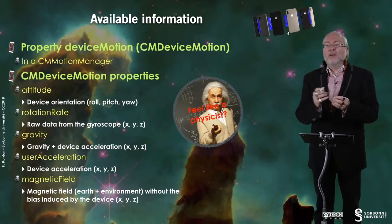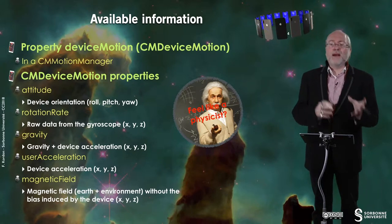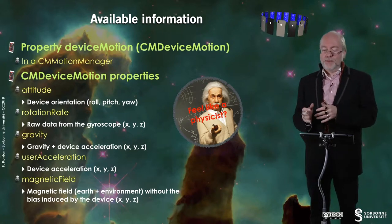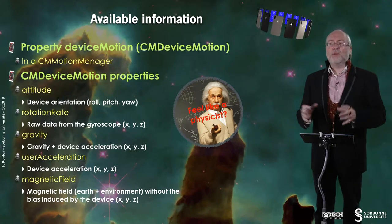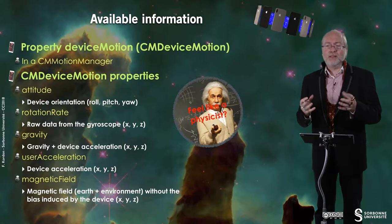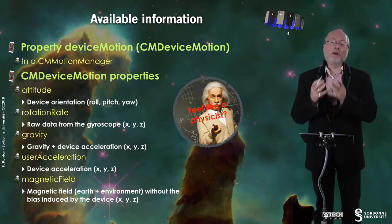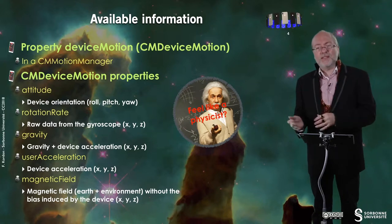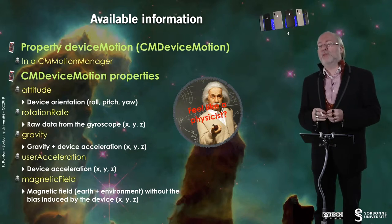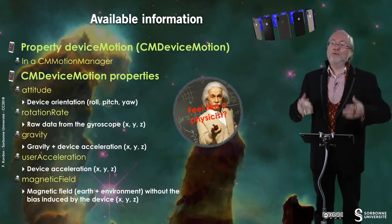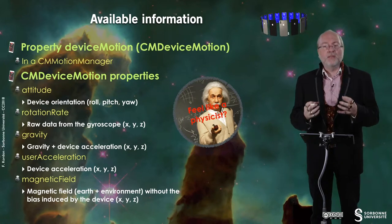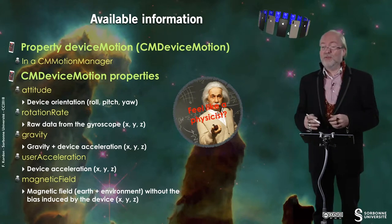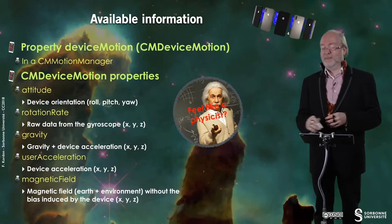The magnetic field includes the Earth plus the environment without the bias introduced by the device, along the three axes X, Y, and Z. To be honest, I'm not a physicist so I'm not really competent in how to exploit this information and what you can do with it. I will provide some examples in further videos, but my role here is just to give you the way to access this information.